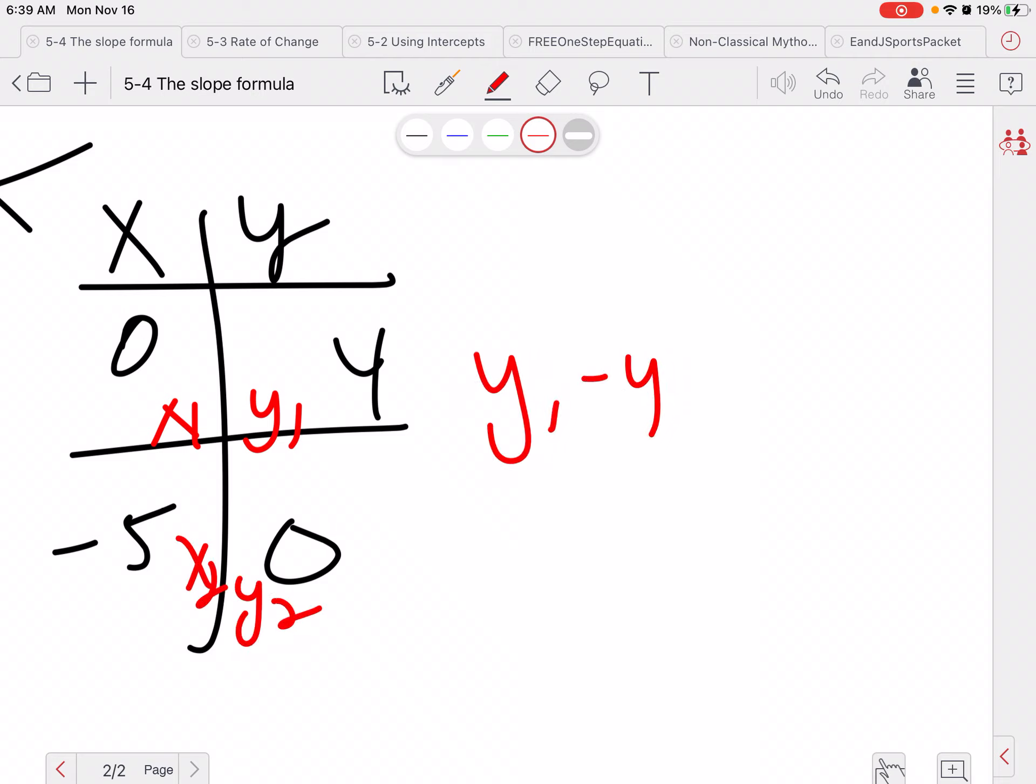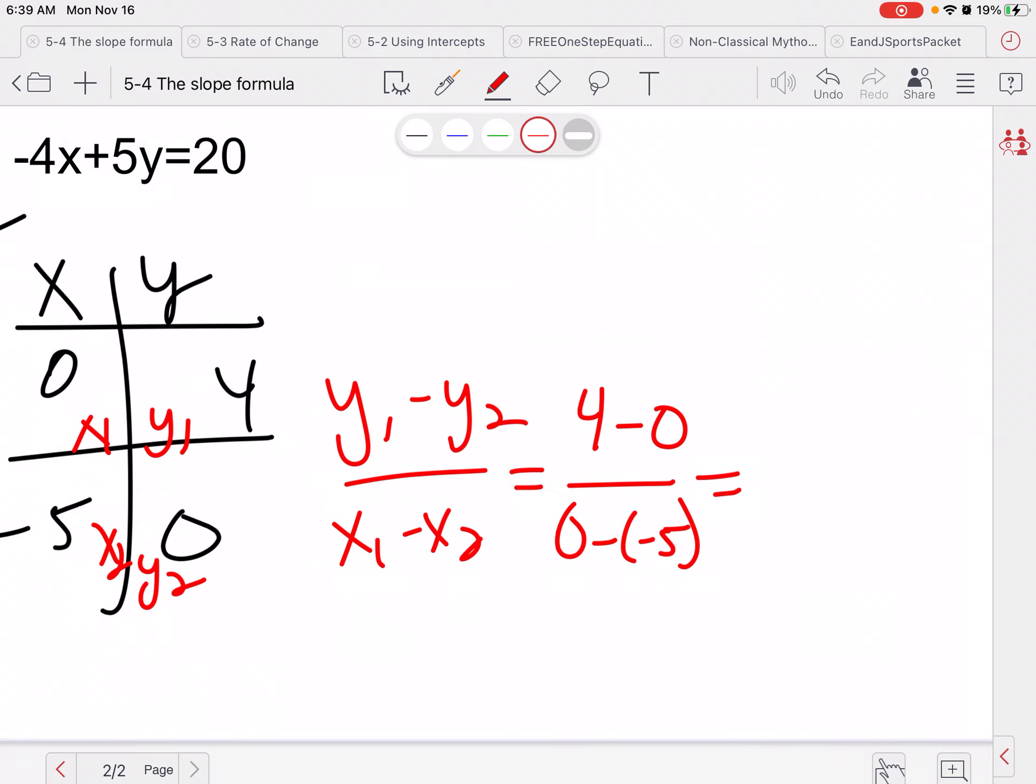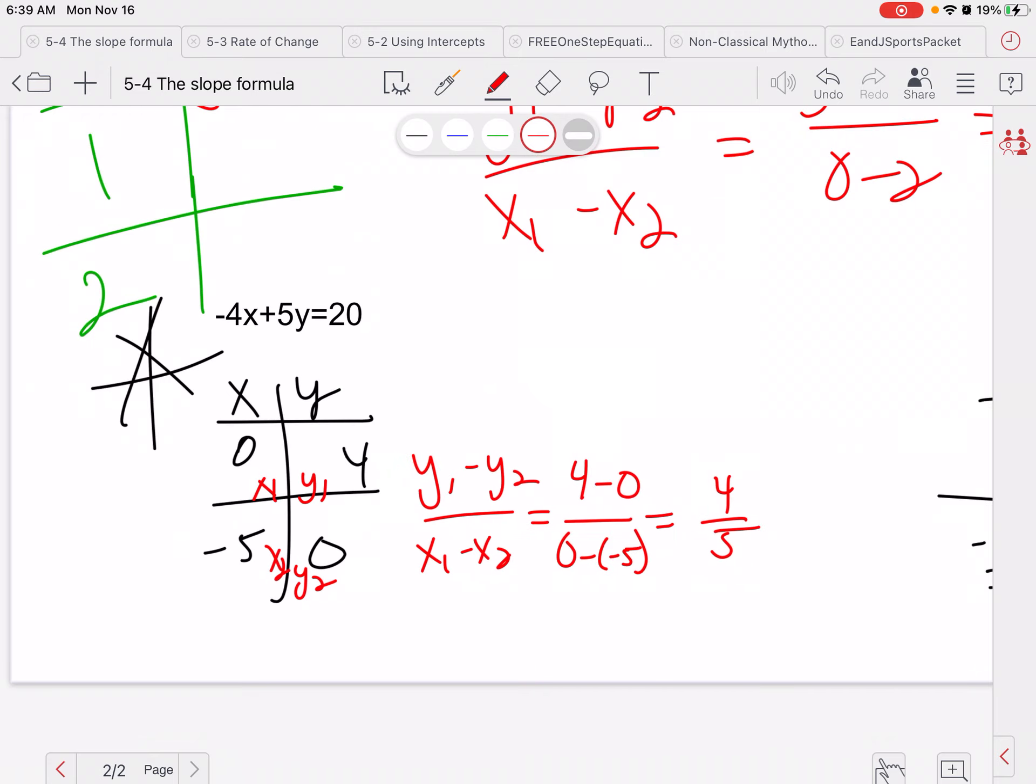So my formula is y1 minus y2 over x1 minus x2. So I'm going to have 4 minus 0 over 0 minus negative 5. Make sure you're taking that sign. So that would be 4 over 5. Have a wonderful day, and we will talk to you later. Bye.